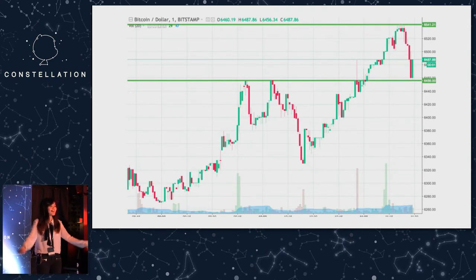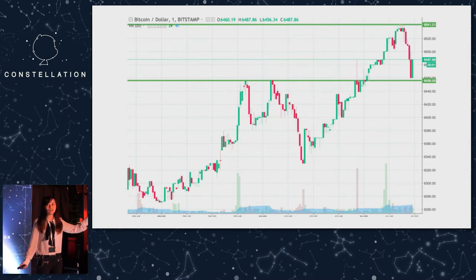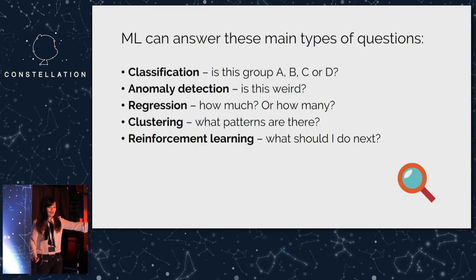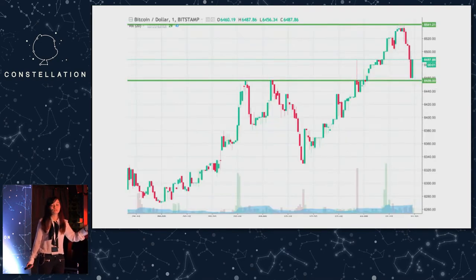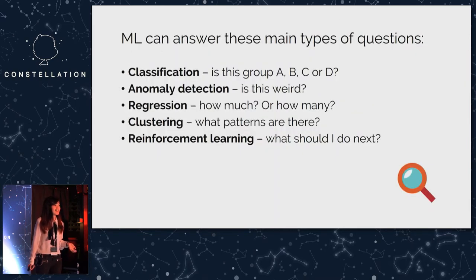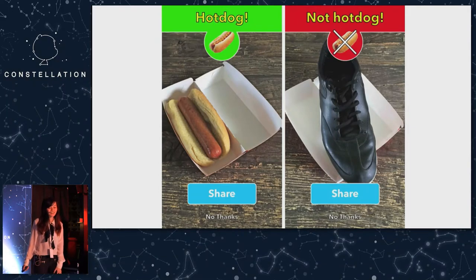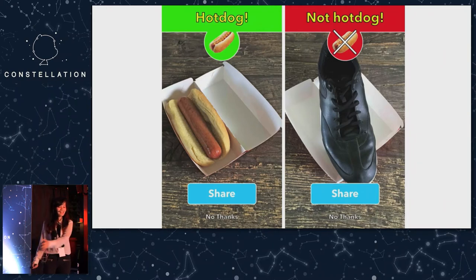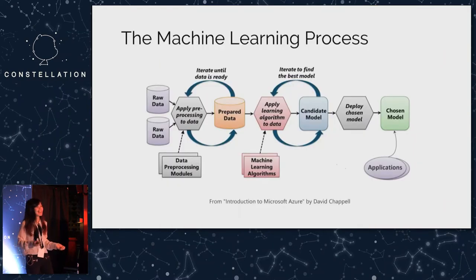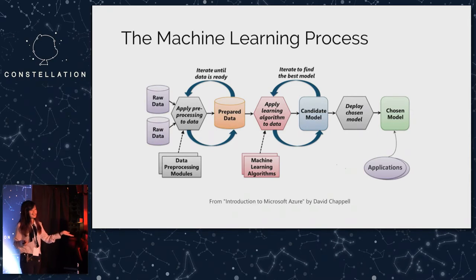Let me ask a couple of questions. If you want to predict the price of Bitcoin tomorrow, what ML technique would you use? Regression — correct! And if you want to predict whether something is a hot dog or not, what technique is that? Classification — correct! See, not so hard.